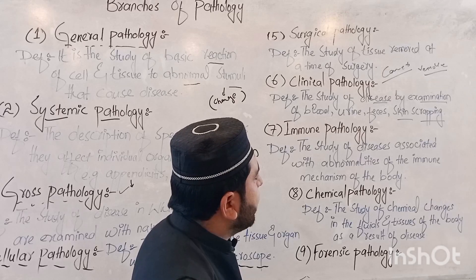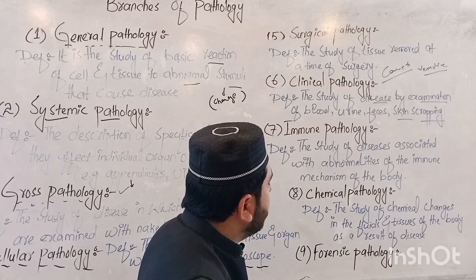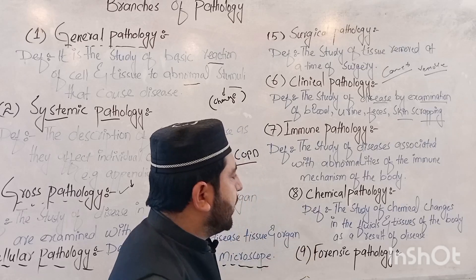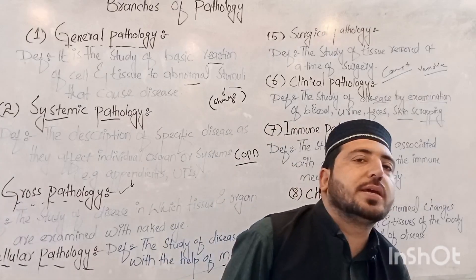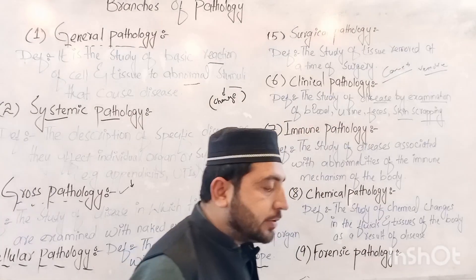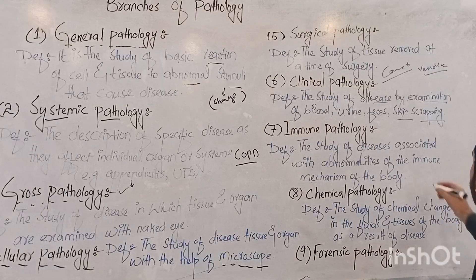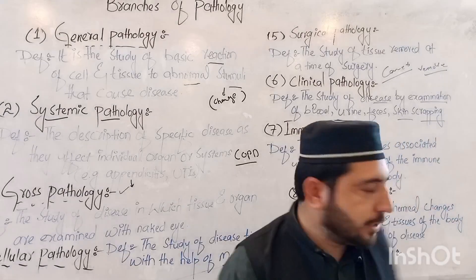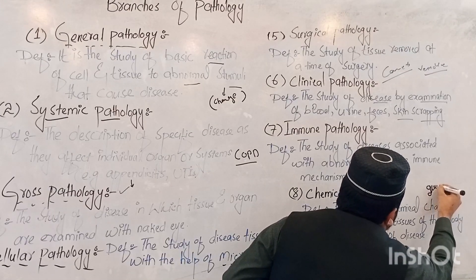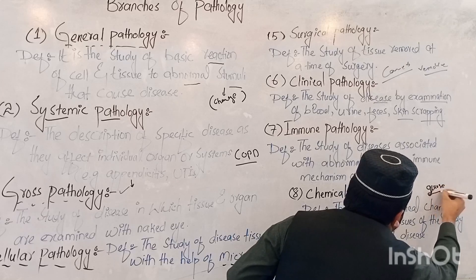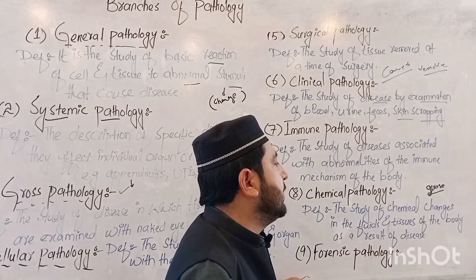Chemical pathology is the study of chemical changes in the fluids and tissues of the body as a result of disease. For example, changes in glucose levels in the body can indicate conditions such as hypoglycemia or diabetes.